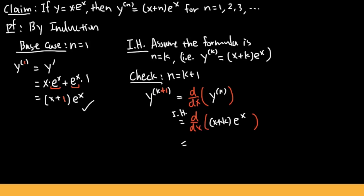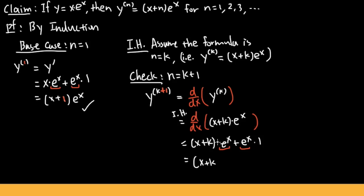Now we have (x plus k) times e to the x to differentiate — again a product of two functions, so I use the product rule. Keep the first function (x plus k) and multiply by the derivative of e to the x, then add e to the x times the derivative of (x plus k), which is just 1. Both terms have e to the x, so factoring that out gives (x plus k plus 1) times e to the x.